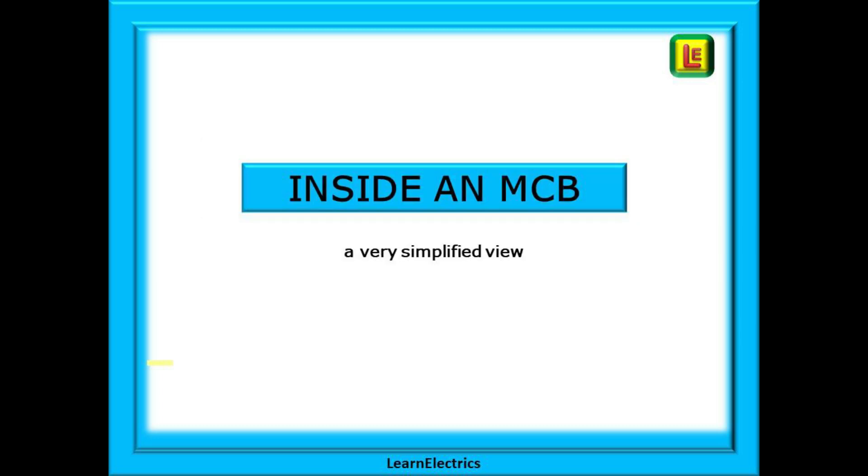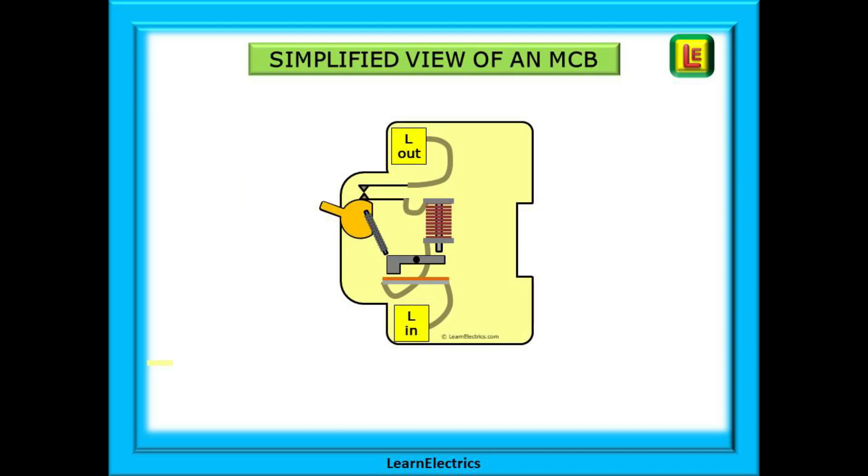We can look at a very simplified view of the inside of an MCB. In this simplified and stripped back view we just have the parts that will explain the basic operation. The line or phase voltage comes in at the bottom picked up from the consumer unit bus bar and line or phase goes out at the top to the circuit wiring in the property.